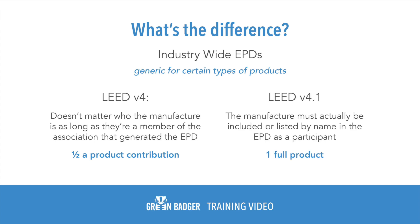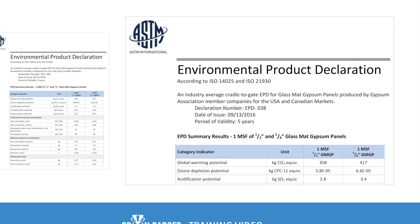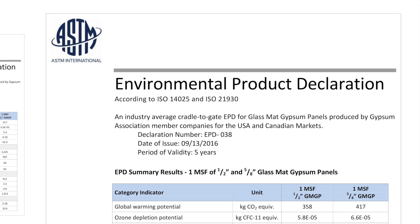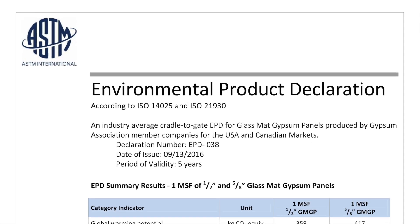Under version 4.1, it is more stringent. The manufacturer must actually be included or listed by name in the EPD as a participant. You can see an example of that here. These count as one full product under version 4.1.